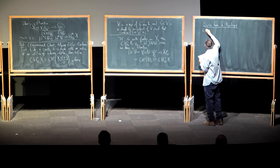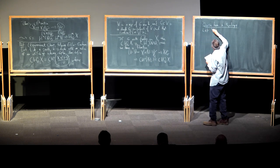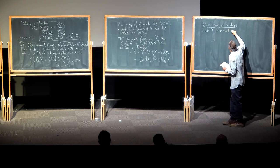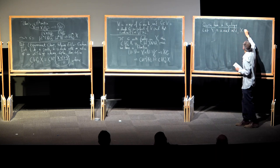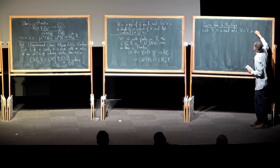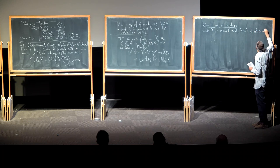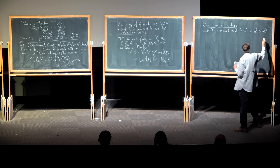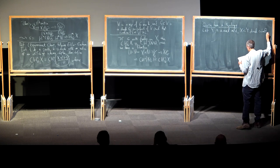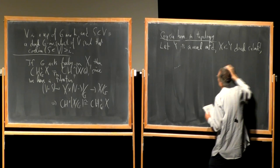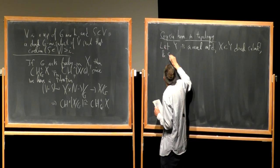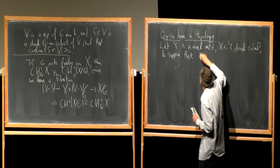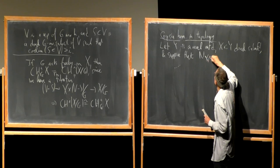Consider the following setup: Y is a real manifold, X inside Y is a closed submanifold — closed meaning it's a closed subset, it might not be compact. And suppose we're given an orientation on the normal bundle of X in Y. The typical way this comes up is if you're given orientations on both X and Y, then that determines an orientation on the normal bundle. Given that, you can define a push-forward, or Gysin homomorphism.